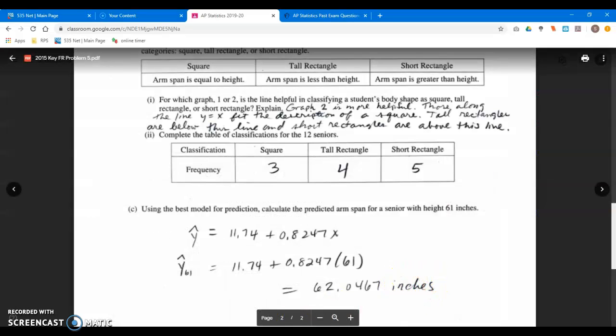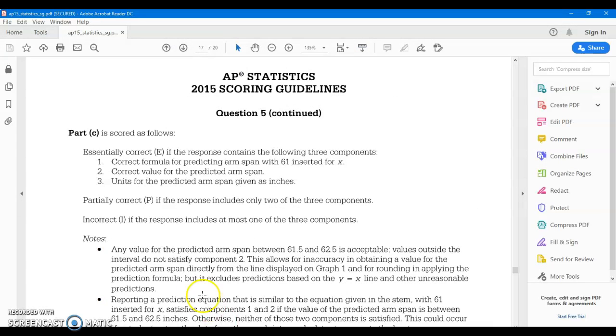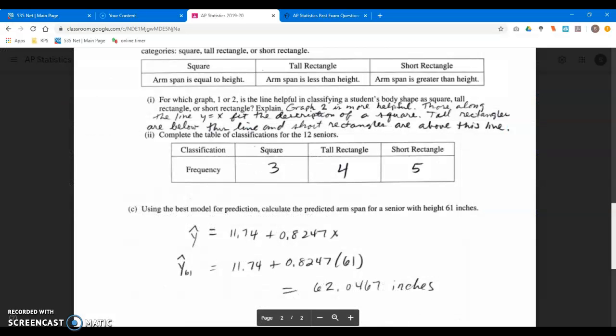That would really suck to go from a score of four for this question to three because you didn't put inches. So put the units on your answers for the stats test, got it? Hopefully you're out there and tuning in to these videos to pick up those tips. Any value for the predicted arm span, it says, between 61.5 and 62.5 is acceptable. Wow. Maybe somebody isn't using the equation then; maybe they're using the graph to make that estimation. Values outside the interval do not satisfy component two. Correct value for the predicted arm span - or if you're wondering about how accurate to round off, then I guess it doesn't much matter. 62.0 would be fine.